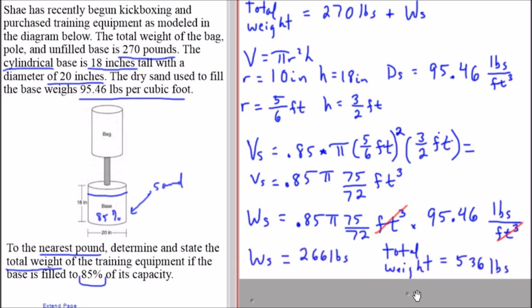The last thing we need to do is multiply 0.85 times pi times this fraction times this number, and when we round it to the nearest pound this works out to 266 pounds.